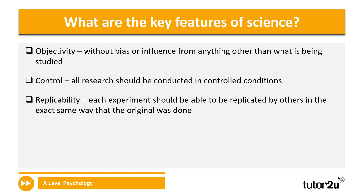Replicability is another key feature of science, meaning that other researchers can repeat the study in the same conditions and continue to find out whether results are reliable over time or between several studies. Without the ability to replicate, no such reliability can be assessed, calling into question any findings or conclusions from research.